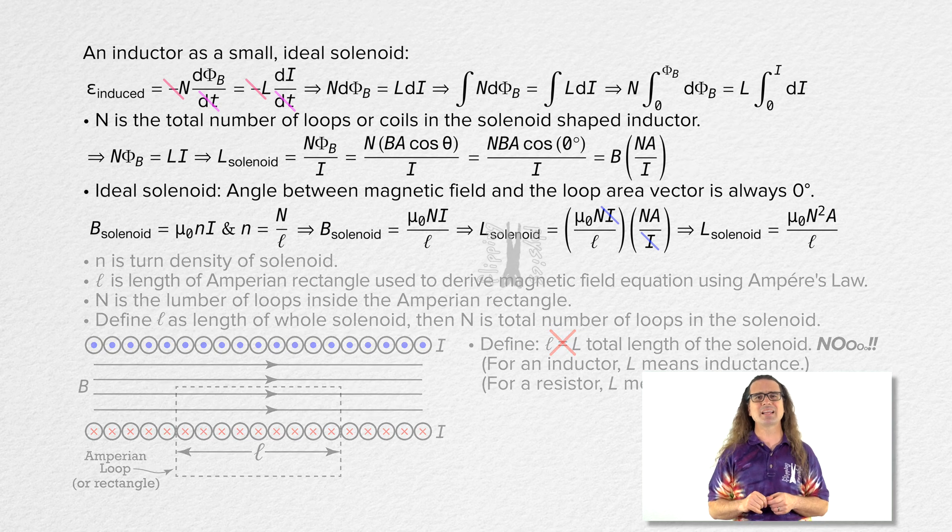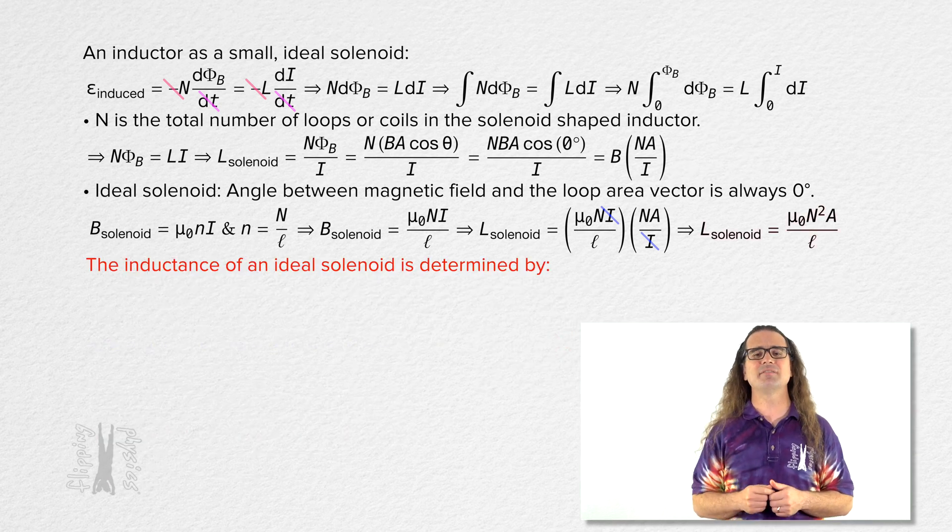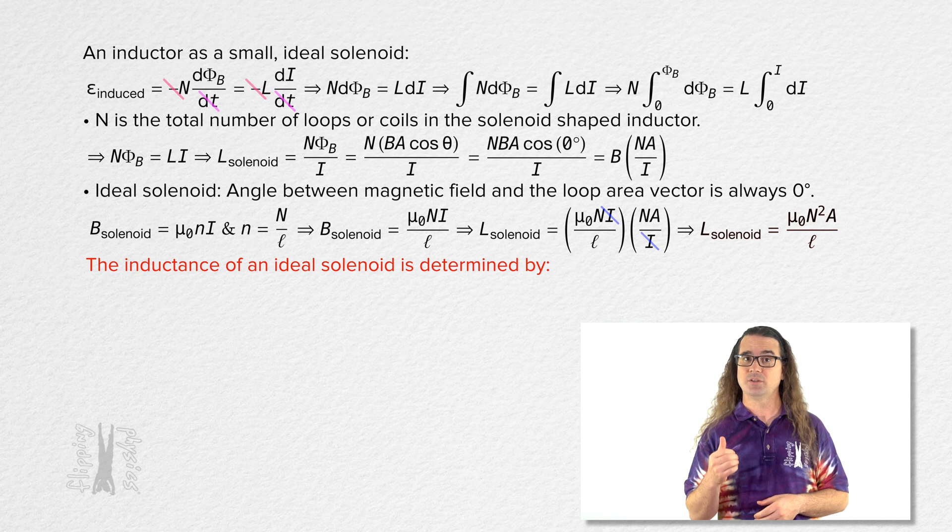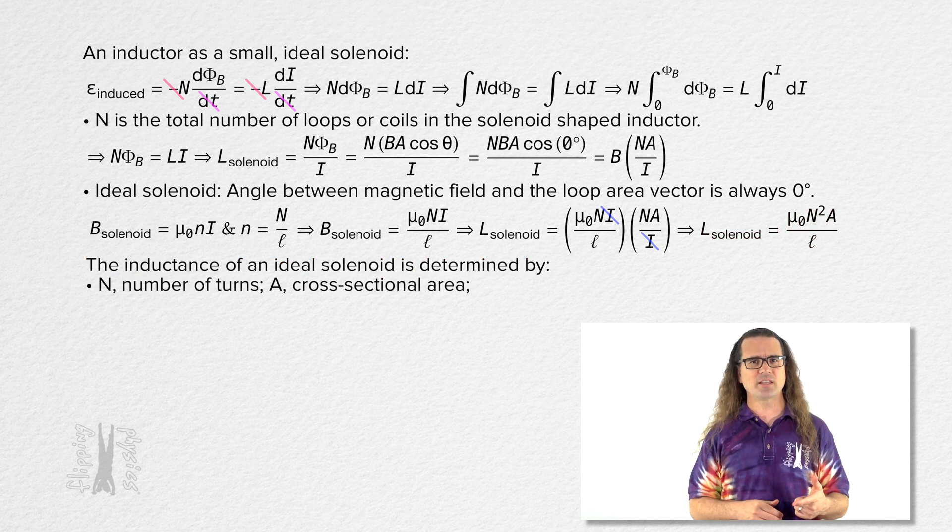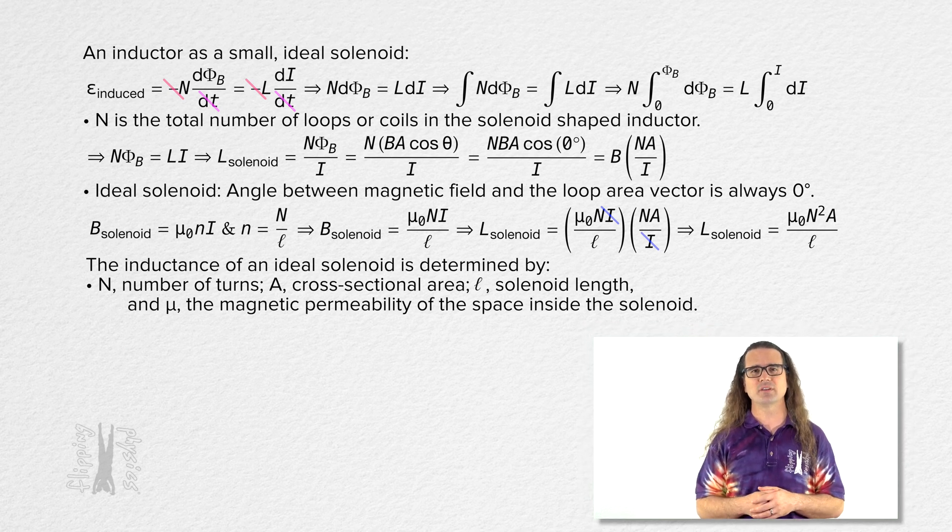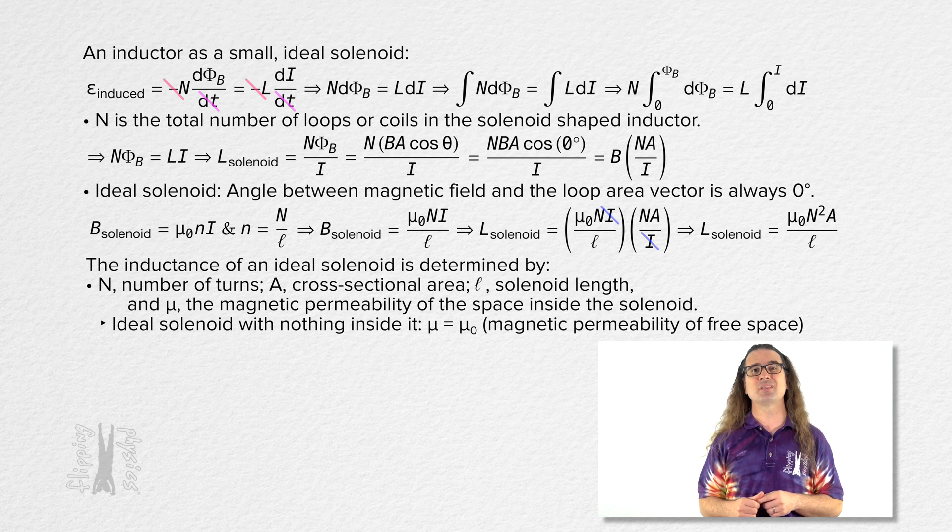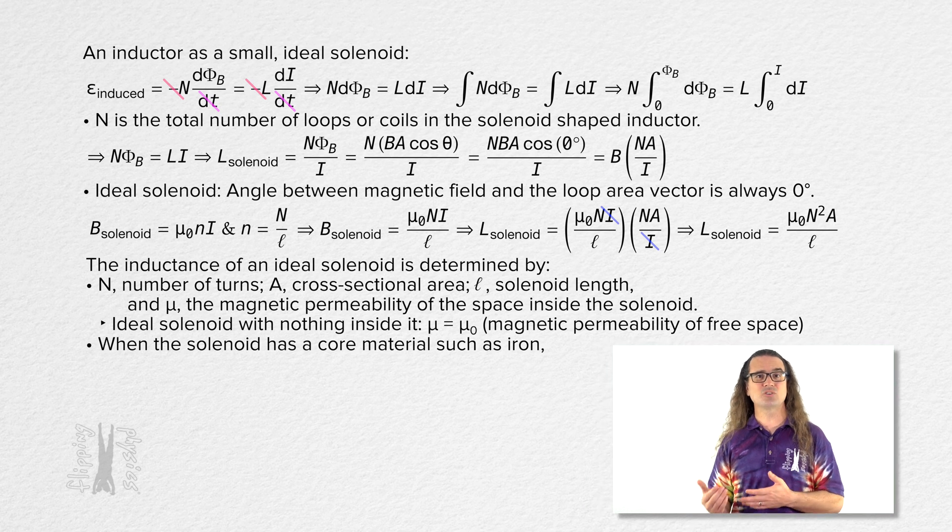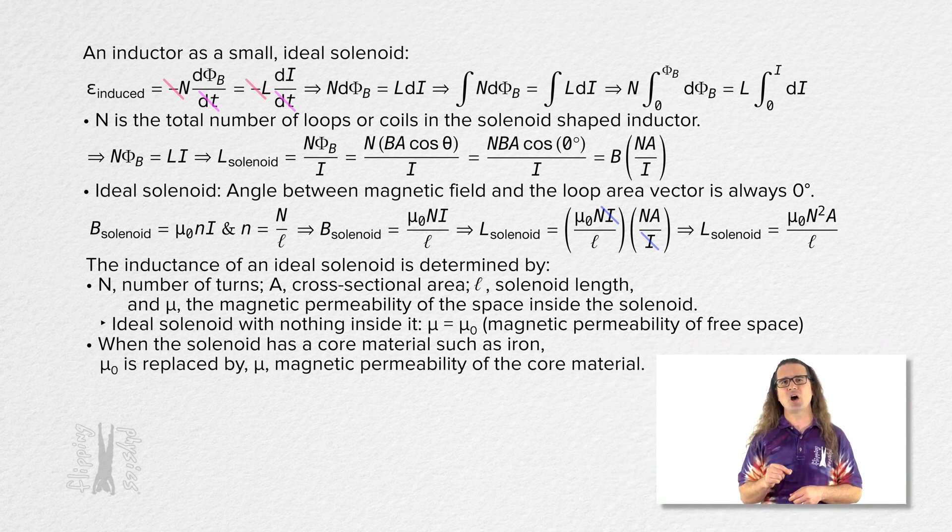Let's take a moment to recognize what determines the inductance of an ideal solenoid. Number of turns, cross-sectional area, solenoid length, and the magnetic permeability of the space or core material inside the solenoid. For an ideal solenoid with nothing inside it, that equals the magnetic permeability of free space. When the solenoid has a material in its core, like iron, mu-naught is replaced with mu, the magnetic permeability of the core material.